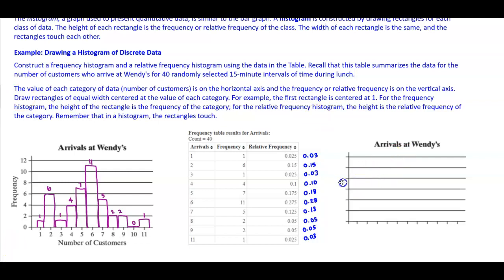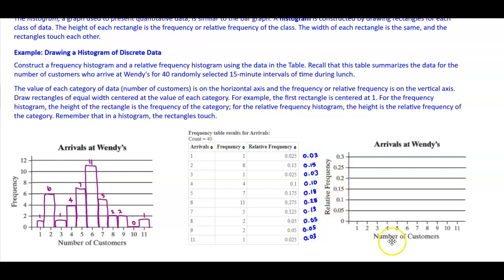Now over to the right, we're going to create a relative frequency histogram. On the vertical axis we have relative frequency going from 0 to 0.3, since the highest value is 0.28. The horizontal axis again has the number of customers. For 1, we go to 0.03. For 2, we go to 0.15. For 3, it's 0.03. For 4, it's 0.10.